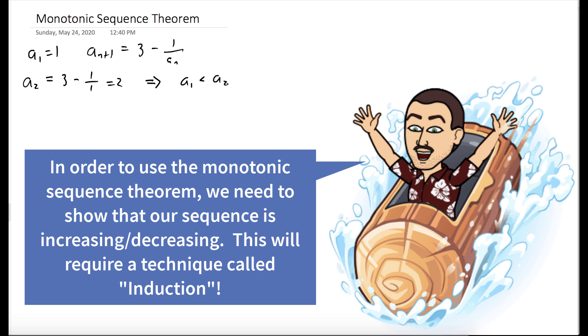We need to show that it's increasing from a_1 to a_2, which we can clearly see it is. And then we're going to assume that a_k is less than a_{k+1}, and we're going to show that this implies that a_{k+1} must be less than a_{k+2}. So we're using induction here.